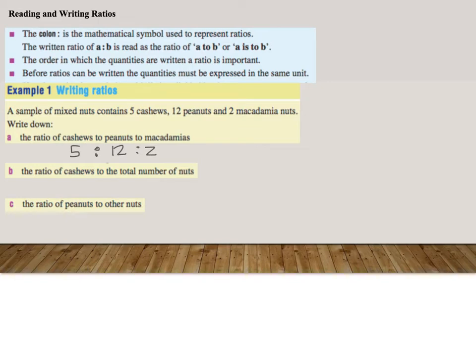Number B. The ratio of cashews, 5, colon, the total number of nuts. So what's the total number of nuts? There's 5 cashews, there's 12 peanuts, and there's 2 macadamias, which gives us a total of 19. So 5 to 19.